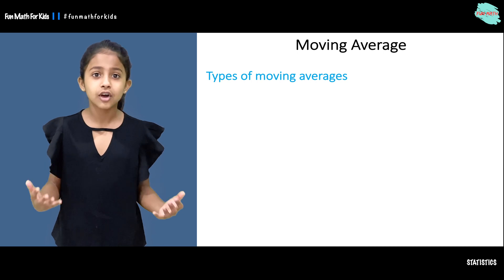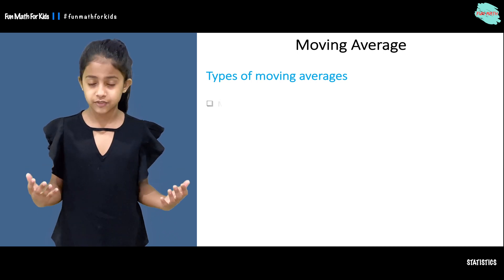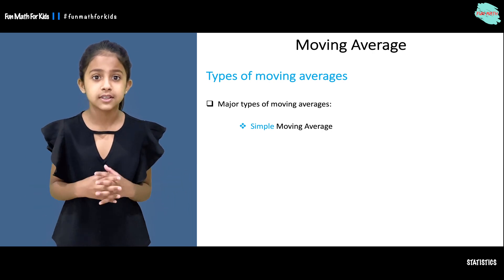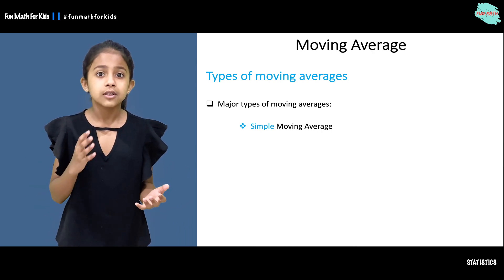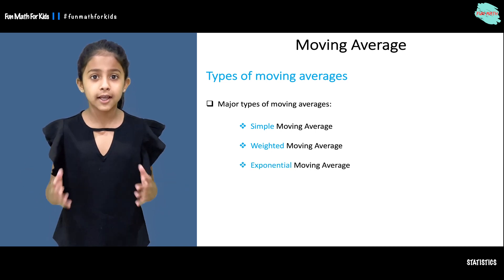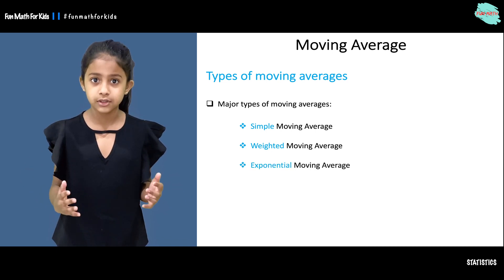Now let's move on and talk about types of moving averages. There are three major types of moving averages which are simple moving average, weighted moving average, and exponential moving average.